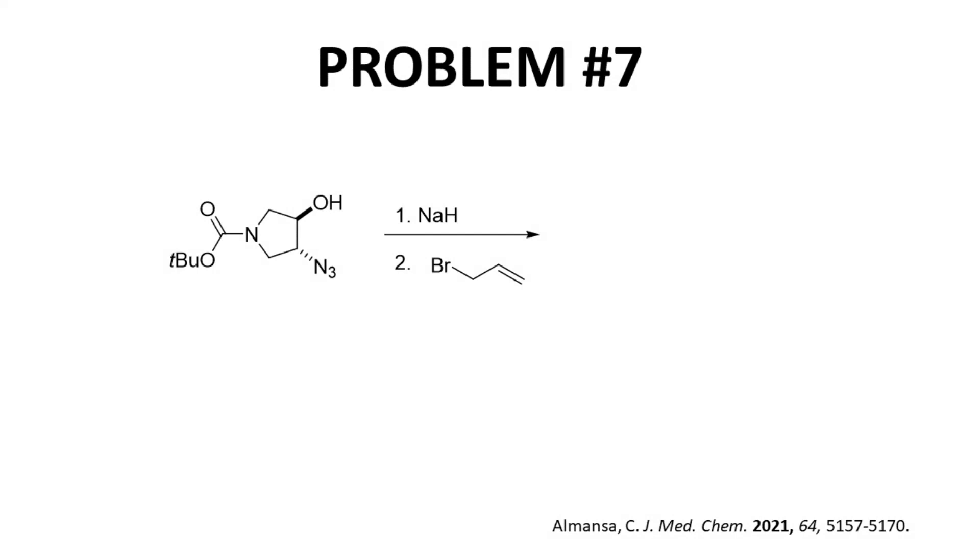Problem seven. The first thing that catches my eye in this problem is the azide. Azides make me think SN2 reactions, but in this question, we're not adding an azide. It's already in the molecule. OK, well, what else do we have? We have an alcohol. Normally, we convert the alcohol into a leaving group through a protonation, conversion to a halide, or formation of a sulfonate. Our reagents do not, however, indicate that kind of reaction. In this reaction, we are given a base.